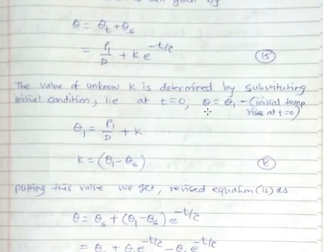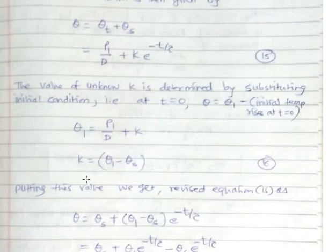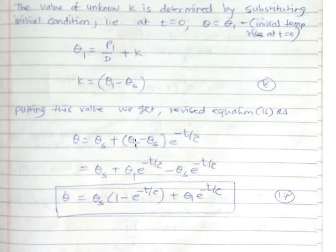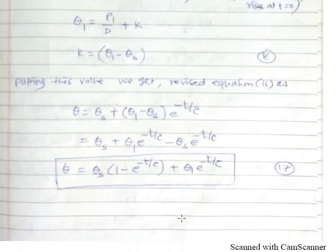The value of K is determined by the initial condition: at T equals 0, let theta equal theta 1, where theta 1 is the initial temperature rise. Substituting this initial condition, theta 1 equals P1 upon D plus K, so K equals theta 1 minus theta S. Substituting K back gives the final expression: theta equals theta S plus theta 1 minus theta S, whole multiplied by e raised to minus T upon tau. This expression is the thermal model of motor for heating.